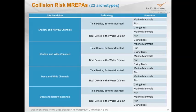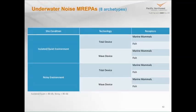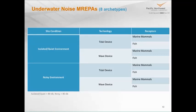We've done the same for noise: the two site conditions being a quiet environment less than 80 decibels of ambient noise, and a noisier environment more than 80 decibels. The technologies are generally just tidal or wave devices, because the sound output depends a little less on the structure and more on the power takeoff units, the generators. The animals at risk are marine mammals and fish — to our knowledge, those are the only marine organisms who can really be bothered by sound. That amounts to eight archetypes.